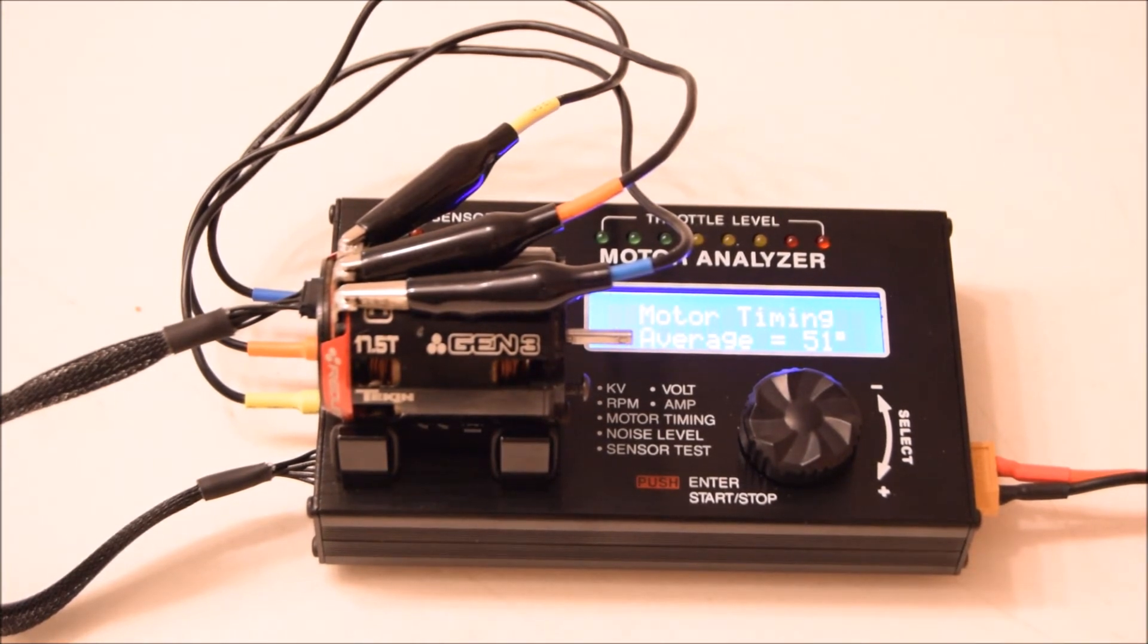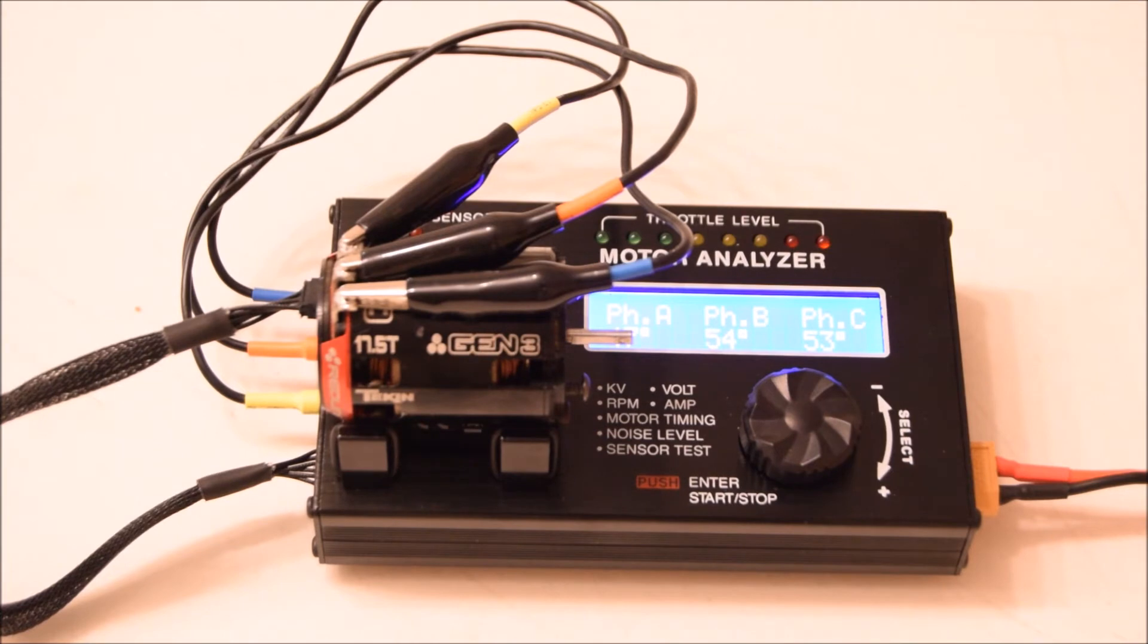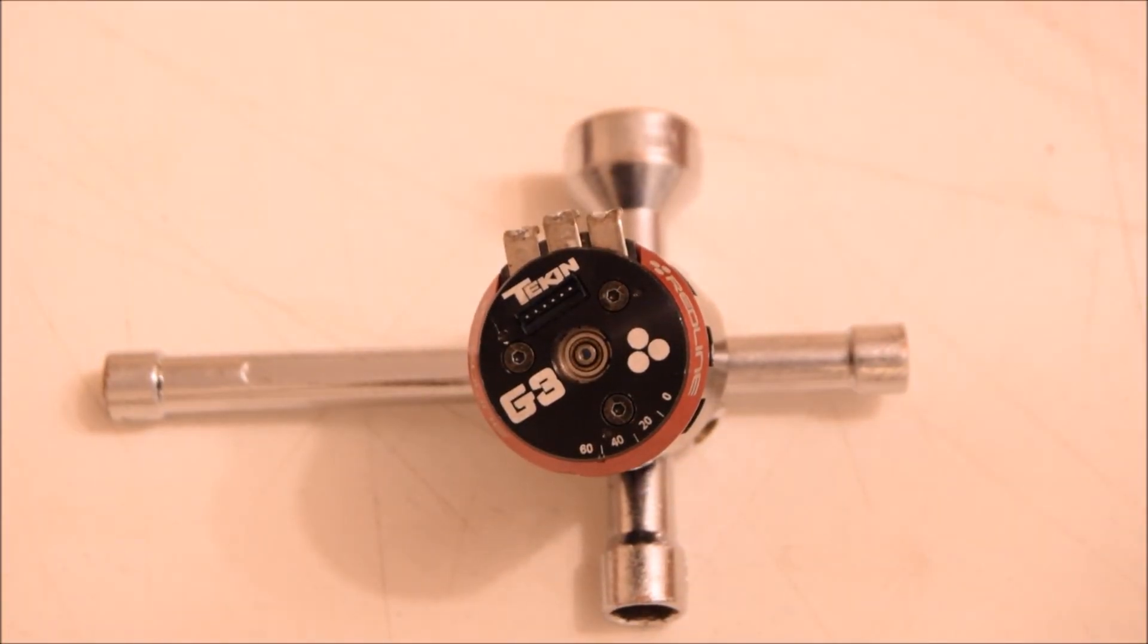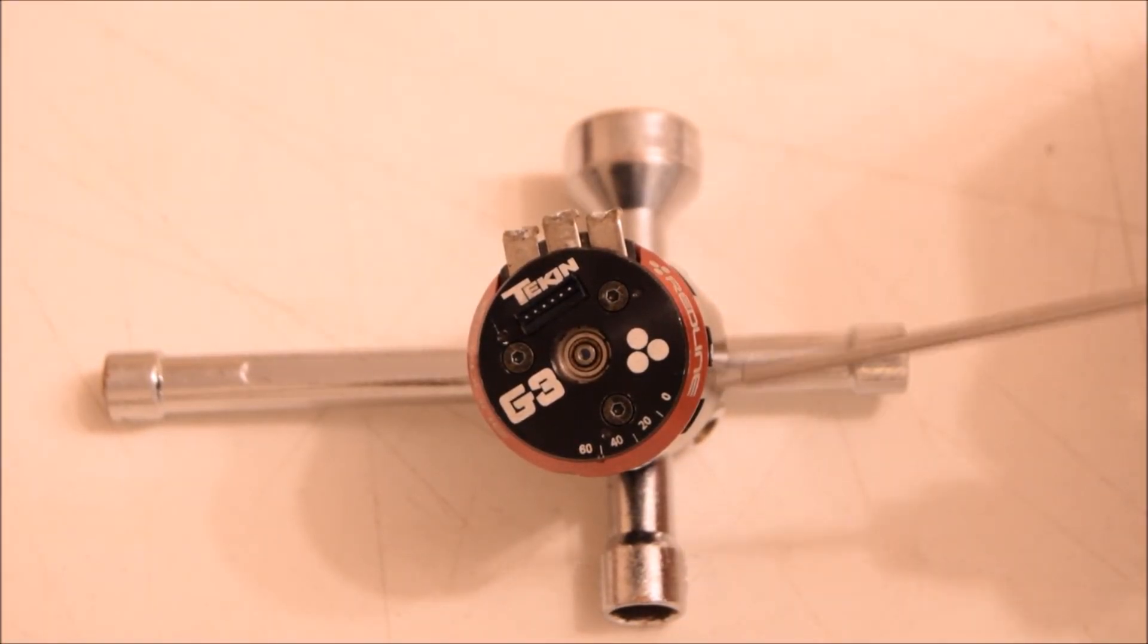For some of you that don't know, this is the end bell timing adjustment I was talking about. You undo these little screws just a tiny bit, and this whole top plate slides around. As you can see, there are numbers: 60, 40, 20, and 0. On the red part here there's a little notch, so this is right around 50.